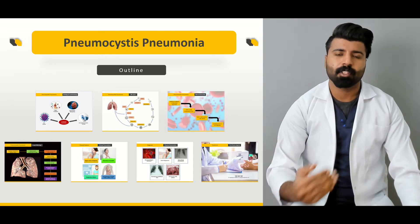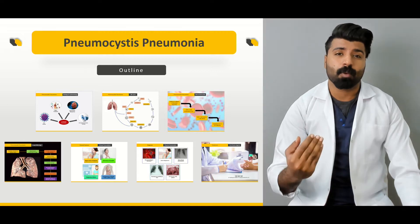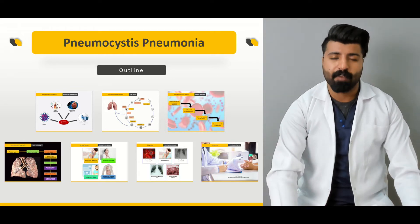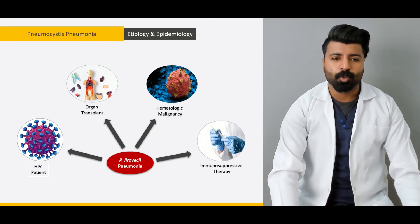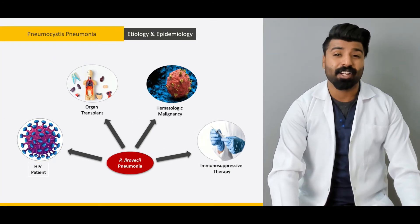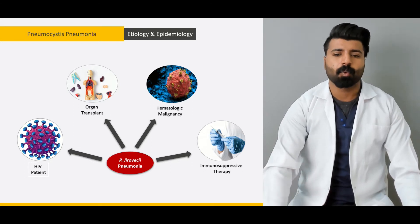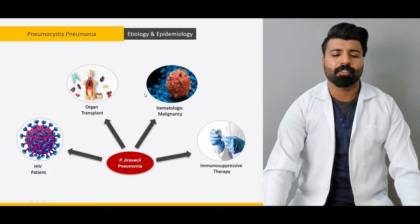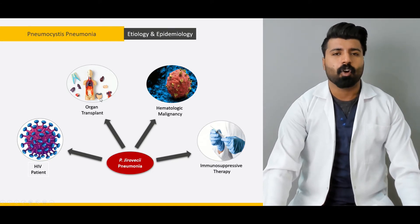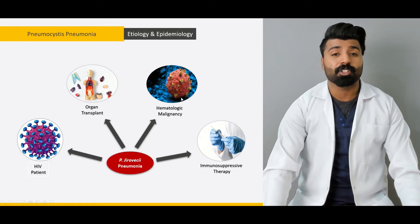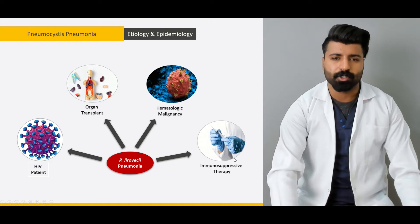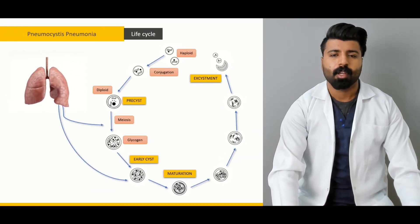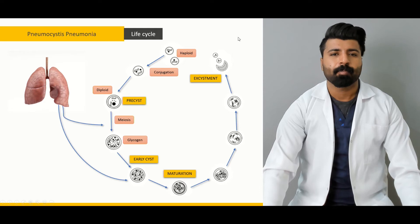Then we'll go over the treatment options — what treatment options we have for this infection. First, we'll talk about the etiology of Pneumocystis pneumonia, which is ubiquitous and found in the environment. Then we'll cover epidemiology — why HIV patients, organ transplant patients, hematological malignancy patients, and immunosuppressive patients are more prone to getting this pathology.